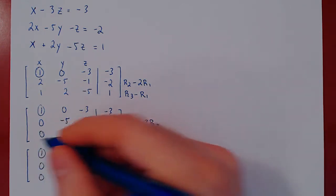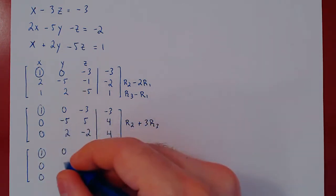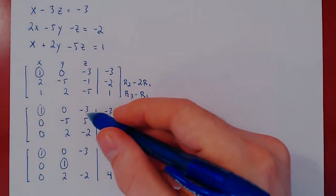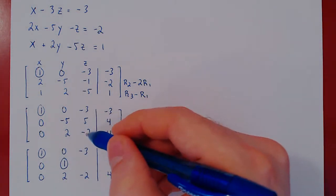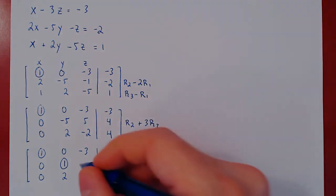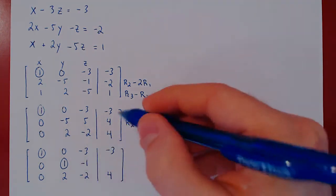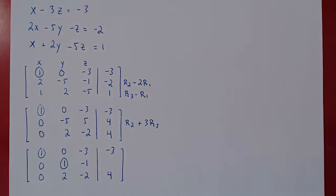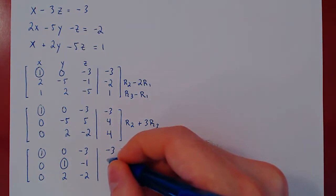And now let's apply this row operation. So 0 plus 0 is 0. Negative 5 plus 6 positive 1, which is our new leading one. 5 plus 3 times negative 2, 5 minus 6, negative 1. 4 plus 3 times 4, 4 plus 12, 16.